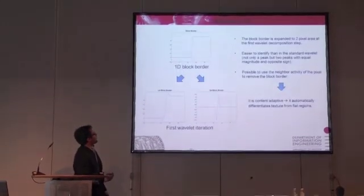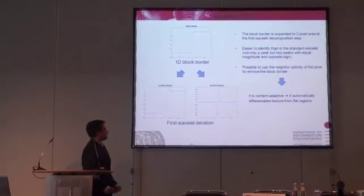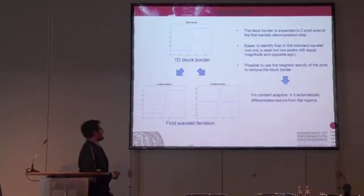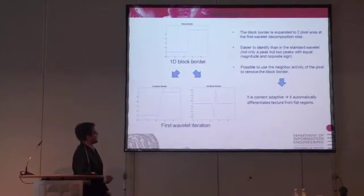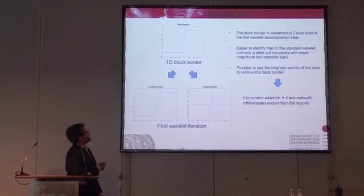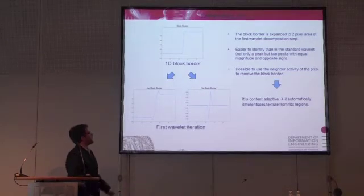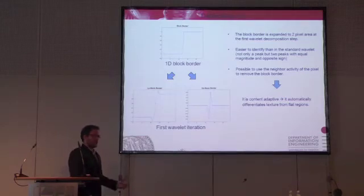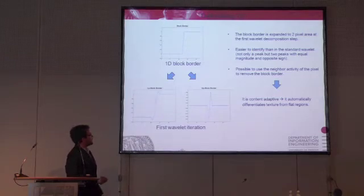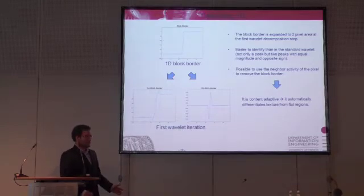Going now to the deblocking. Let's first explain it in the one-dimensional case. Here we have our block border — a strong block border in the one-dimensional case — and this is how it looks at the first level of the translation-invariant wavelet. Let's concentrate on the high-pass, because we are going to base our deblocking algorithm only on the high-pass. In the spatial domain we have a shift in luminance, and now we have high activity in the wavelet domain — two pixels with the same magnitude but opposite sign. So it may be possible to do simple detection of blocks, and the idea is to equalize this activity with the neighboring content, making the algorithm content-adaptive and able to differentiate between texture and flat areas.